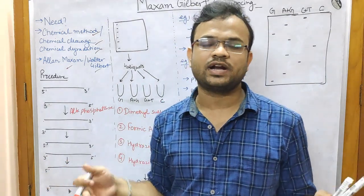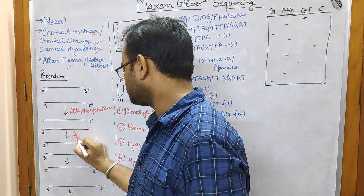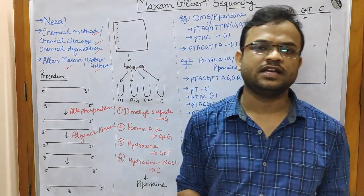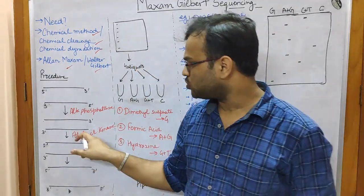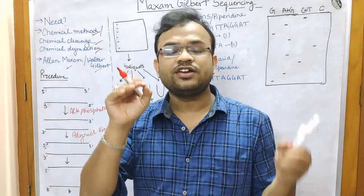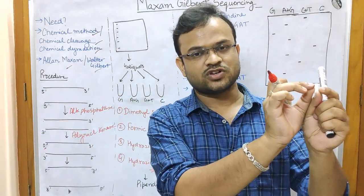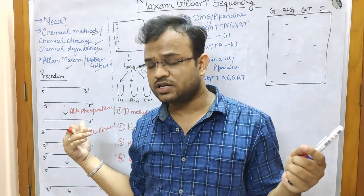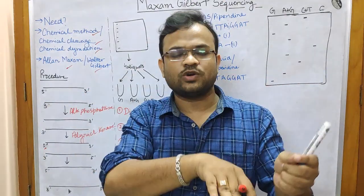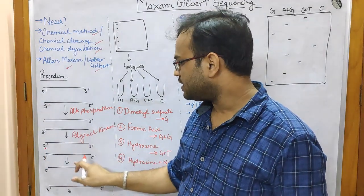In the next step, a radio-labeled five prime phosphate is added using polynucleotide kinase. Polynucleotide kinase adds a radio-labeled five prime phosphate. It should be radio-labeled because during sequencing you need to locate your fragment — when the five prime end is radio-labeled, you can easily identify where each sequence is starting from among the enormous number of sequences.